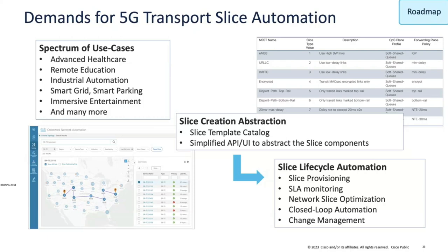What we want to bring is slice creation as an abstraction — give me a catalog, show me the list of catalogs that I can build, like a catalog with VPN plus QoS plus SRT plus assurance. Then the operator can pick for which industry that particular type of catalog is relevant for the slicing service. This is what we term as NSST — network subnet slice template — as defined by 3GPP, which is basically a catalog for your use cases.